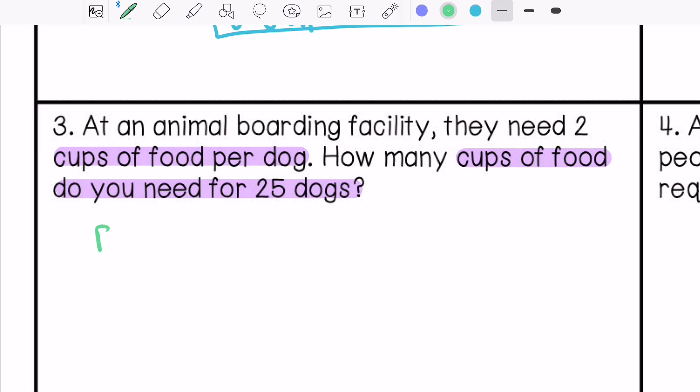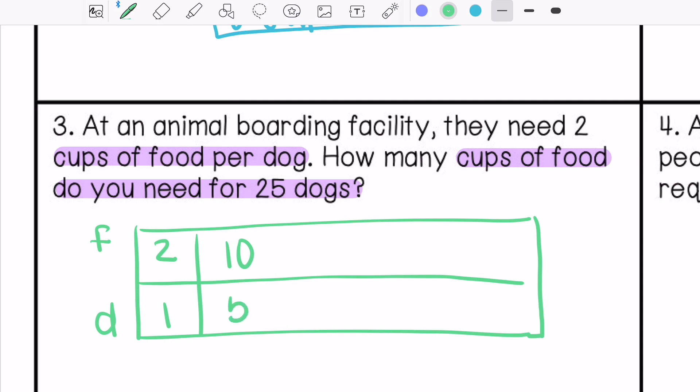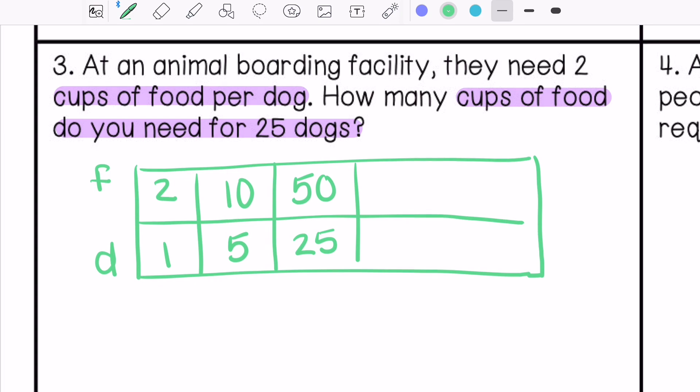So food and dogs. Two cups of food for one dog. If we had 10 cups, that would be times five, so that would be five dogs. If we had times five, which is 50 cups of food, that would be 25 dogs. So 50 cups of food.